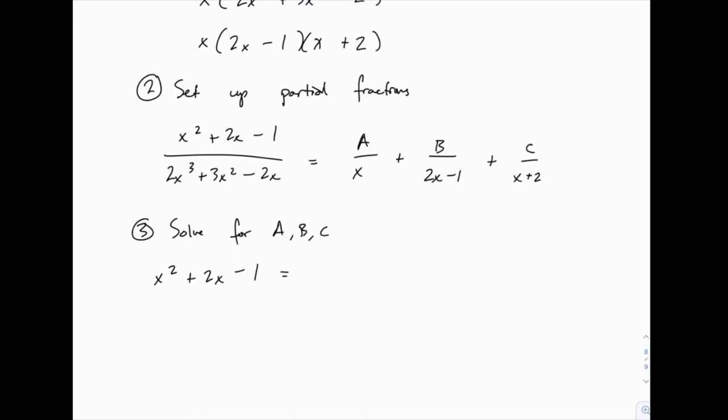So on the first term, the x cancels, leaving just A times 2x - 1 times x + 2. On the second term, the 2x - 1 cancels, leaving B times x times x + 2. And on the third term, the x + 2 cancels, leaving C times x times 2x - 1.